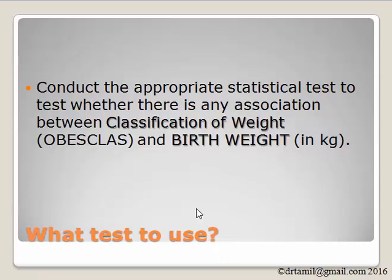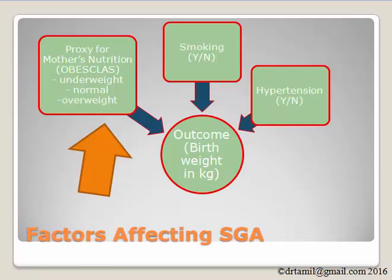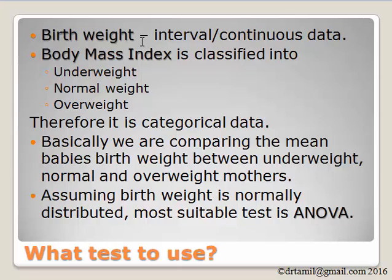The first question we need to answer is what test we want to use. Let us look at the variables we are going to analyze. Obese class is a proxy for mother's nutrition — it is defined as underweight, normal, and overweight. For the birth weight, it is the weight of the babies measured in kg. Since it is in kg, it is continuous data.